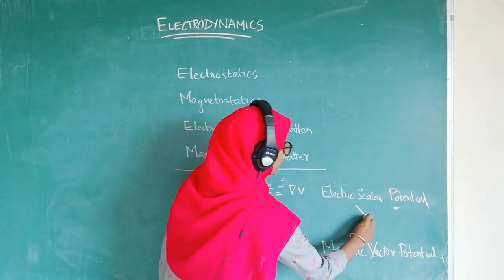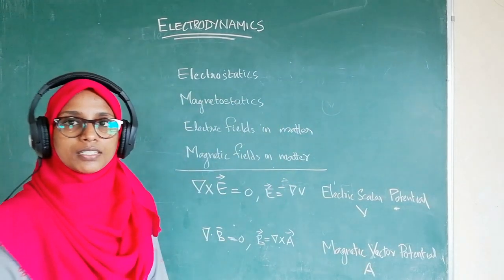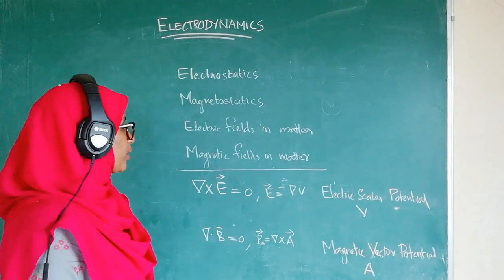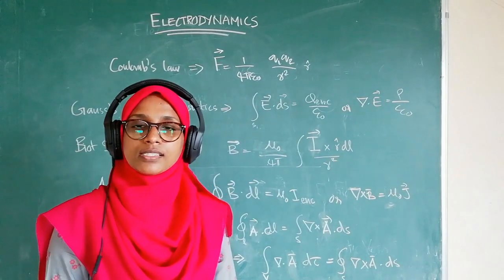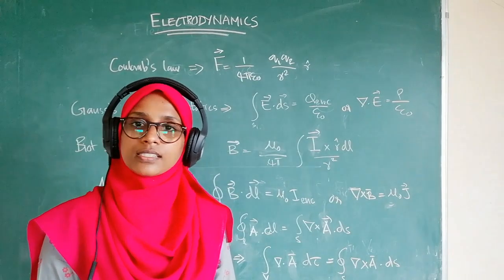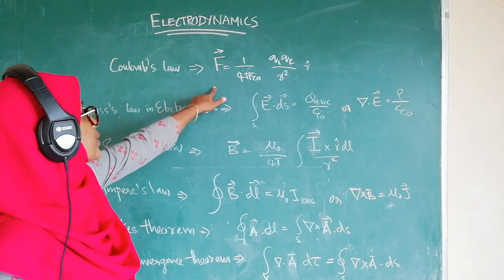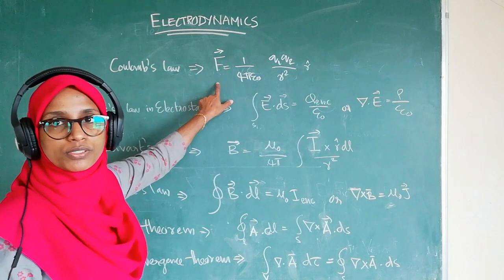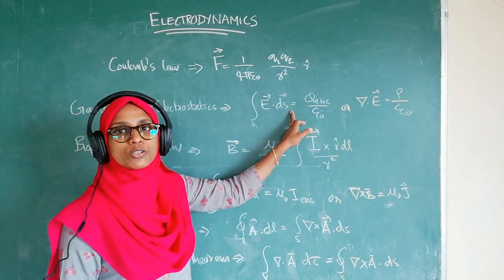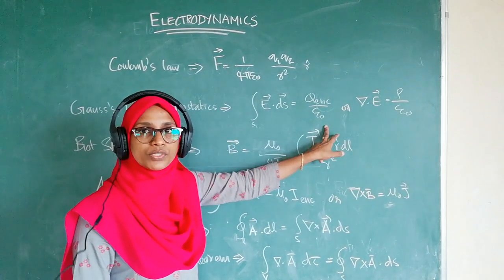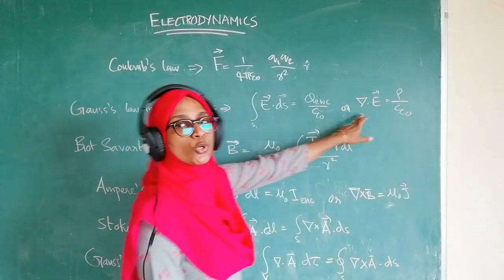So we have the electric scalar potential and magnetic vector potential A. The basic equations in electrostatics begin with Coulomb's law, which relates charges and force, and Gauss's law: the surface integral of E·dS equals Q enclosed over epsilon-zero. The differential form is divergence of E equals rho over epsilon-zero.